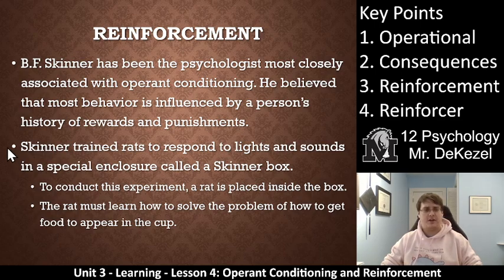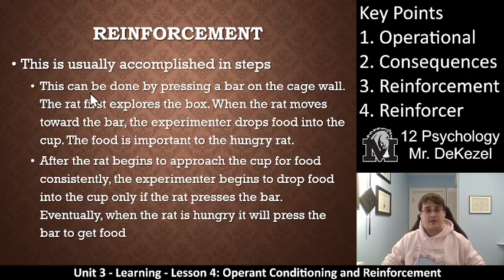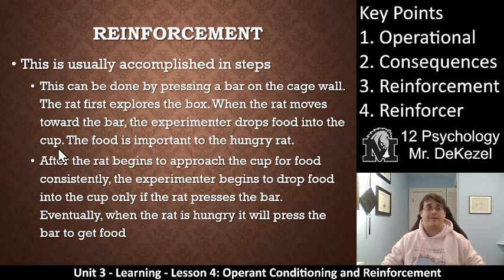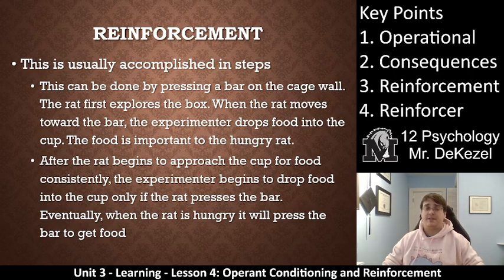It's kind of like getting hotter or getting colder — positive reinforcement when they do something good, punishment or negative reinforcement when they do something bad. This is accomplished in steps. The rat gets through the box by pressing a bar on the cage wall. First the rat explores the box, and when it moves towards the bar, the experimenter drops food into the cup. The rat realizes that when it gets close to the bar, it gets food, so it moves closer more often. After the rat approaches the cup consistently, the experimenter drops food only when the rat has actually pressed against the bar. The rat soon learns it not only needs to get close to the bar, it needs to actually press it to get the food.